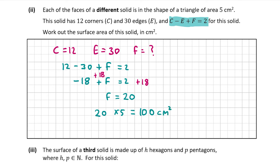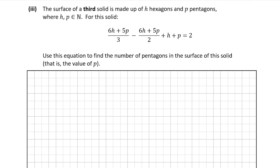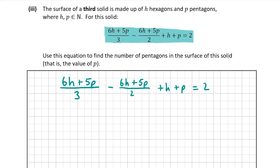That's the answer for part B2, worth 10 marks. Now the final part, B3. We're told that the surface of a third solid is made up of hexagons (H) and pentagons (P), and we're given an equation. We're asked to find the value of P — the number of pentagons. As you'll notice, there are two fractions in this equation. Whenever you want to solve for a variable and you have two fractions, you want to find the lowest common denominator of both fractions and multiply everything by that.